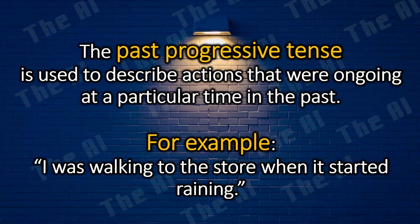The past progressive tense is used to describe actions that were ongoing or in progress at a particular time in the past. For example, I was walking to the store when it started raining.